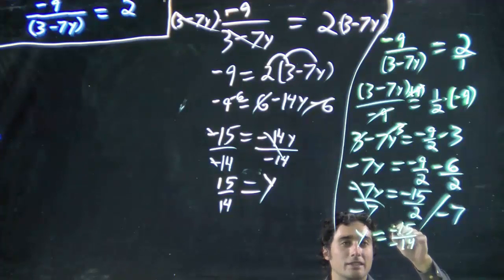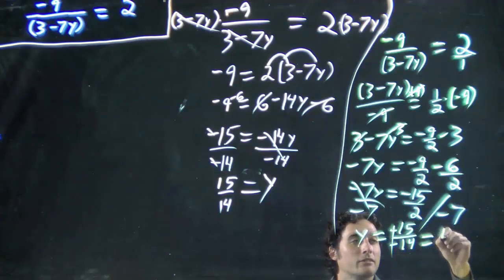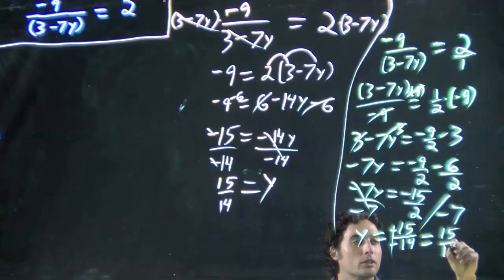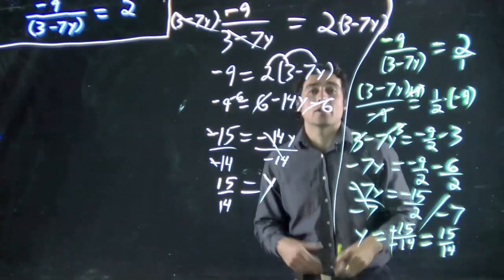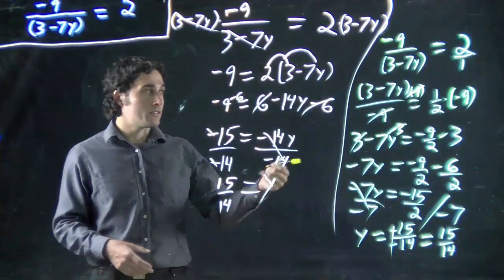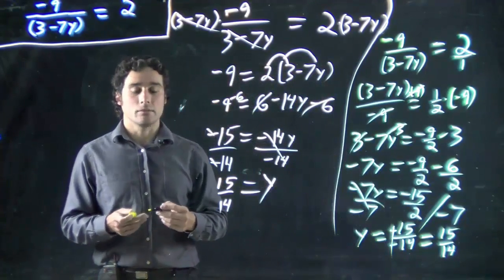But the minuses cancel, so this would be the same as saying 15 over 14. We've just solved for y. We've got the same value for y that we did before as we must. Otherwise, we know we've messed something up. But just again, two different ways of solving the same problem. So thank you.